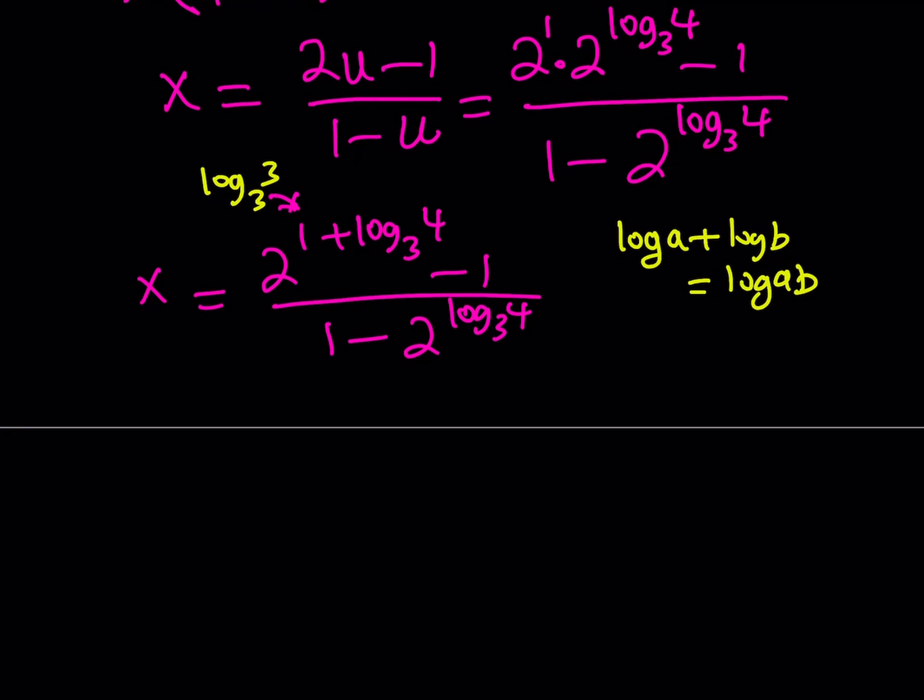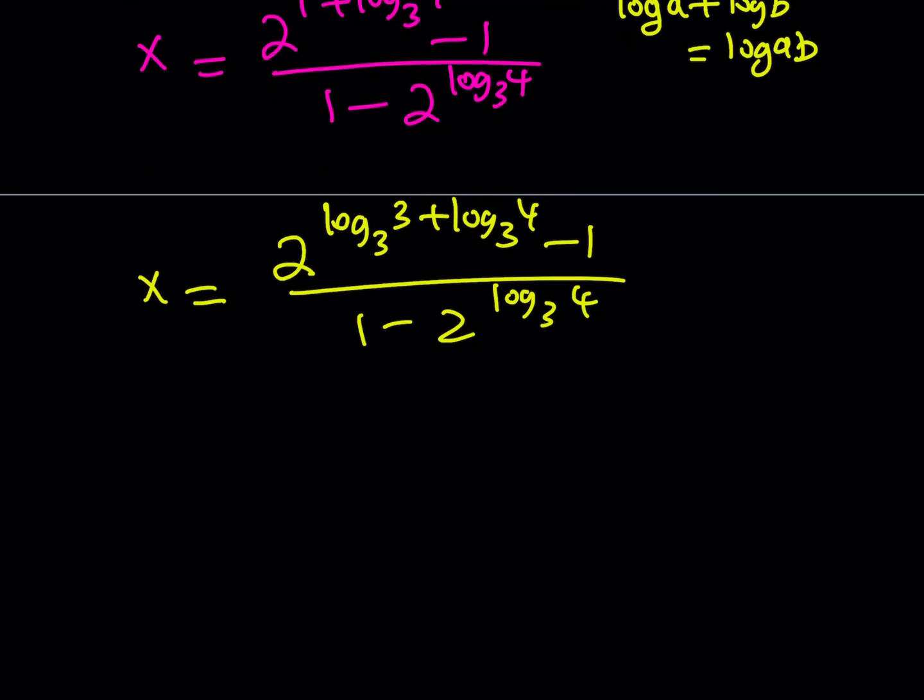So I can just write x as 2 to the power log 3 times 3 plus log 3 4 minus 1 over 1 minus 2 to the power log 3 4. Some people may find this unnecessary but I like to simplify things that's why so bear with me. Now here we can use that rule and write x as 2 to the power log of 12 with base 3 minus 1 divided by 1 minus 2 to the power log 4 with base 3.